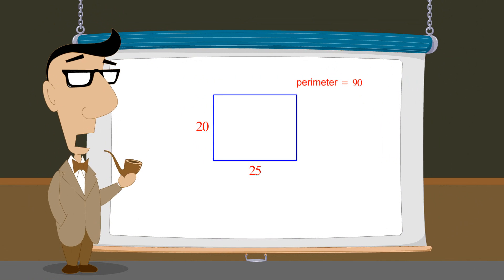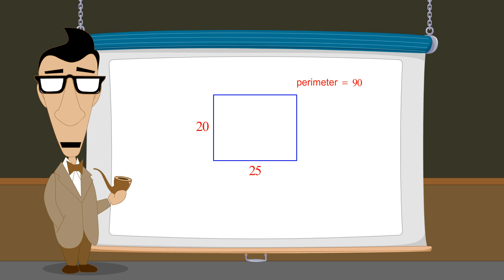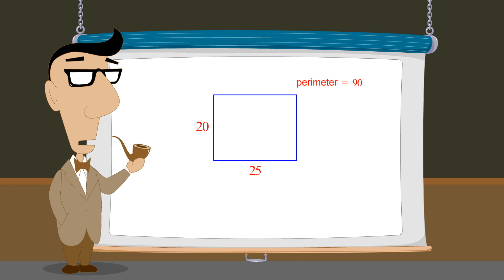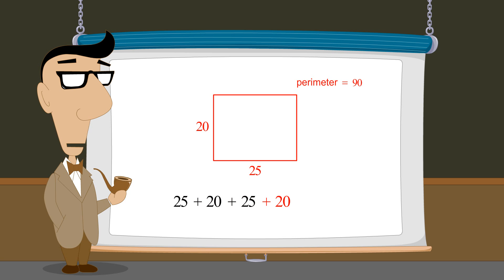This solution is reasonable since the length of the room is five feet longer than its width, and the sum of the lengths of all four sides — twenty-five plus twenty plus twenty-five plus twenty — is equal to the perimeter, which is ninety feet.